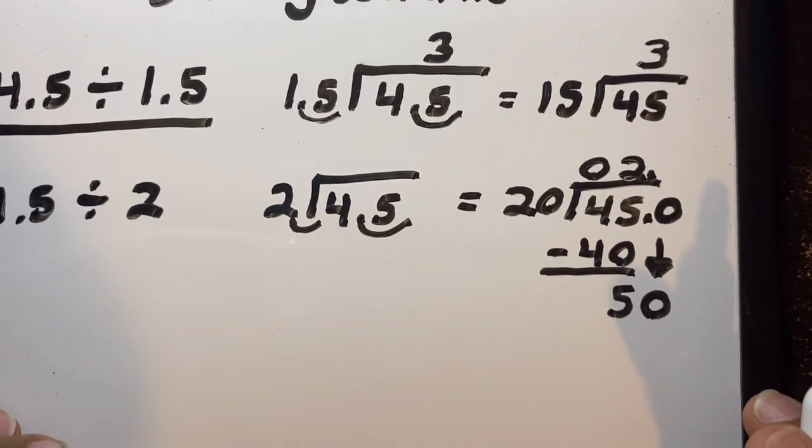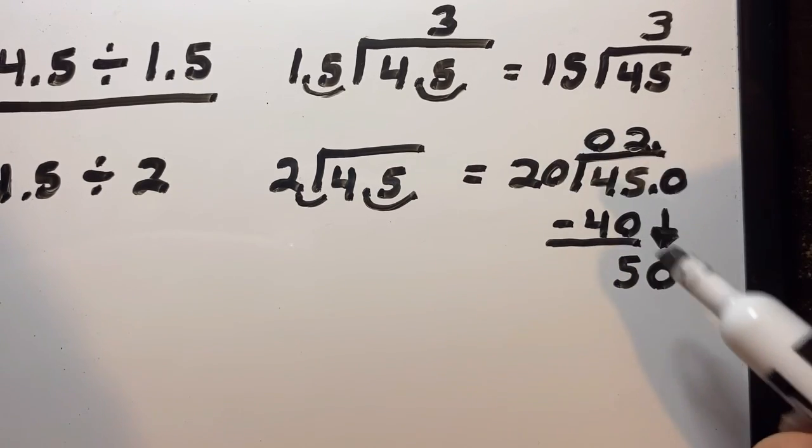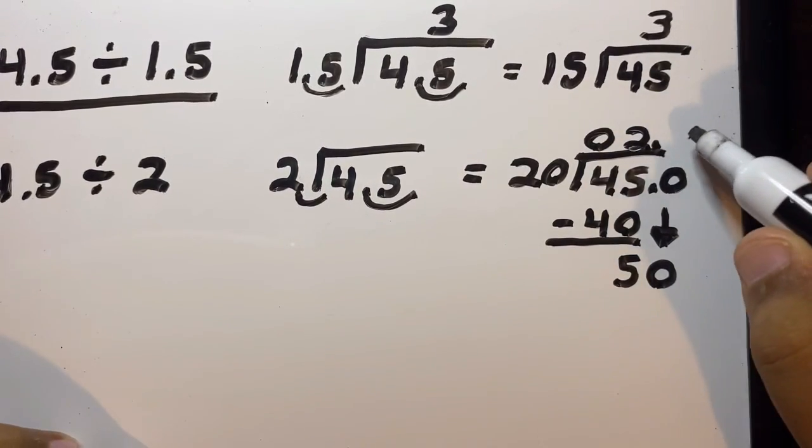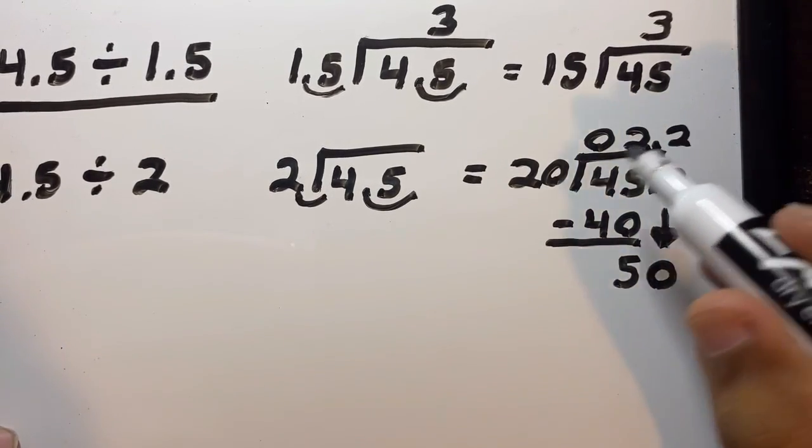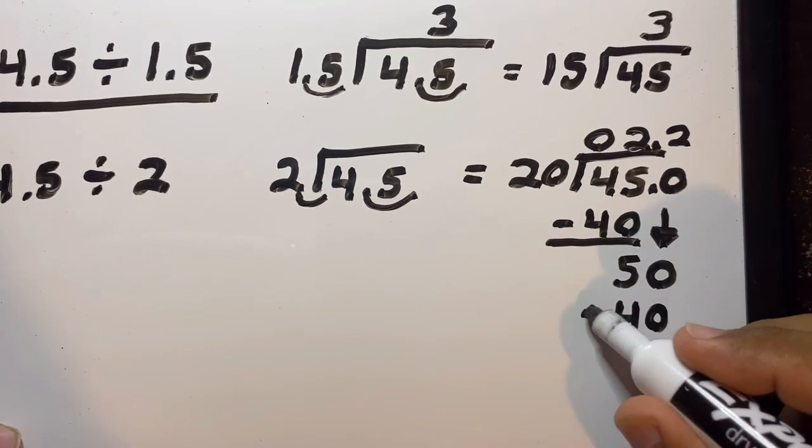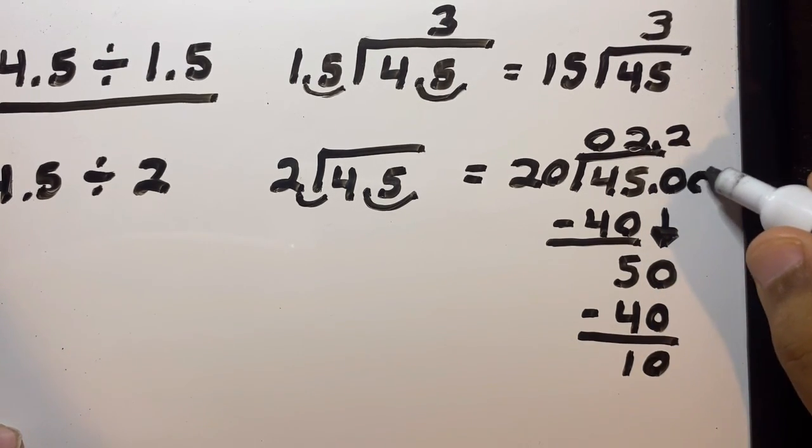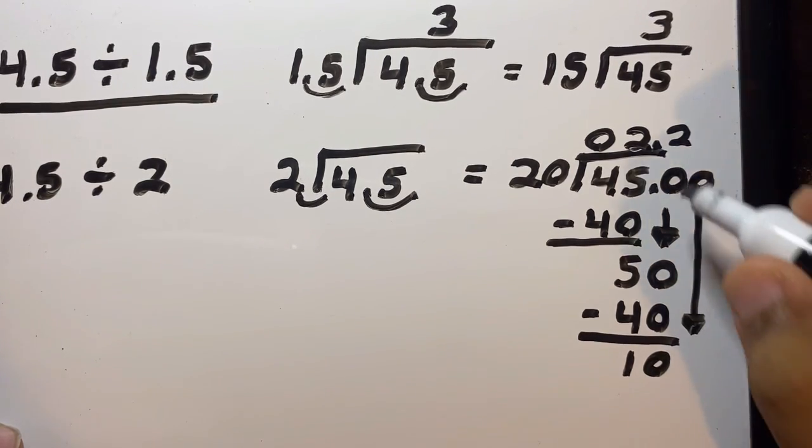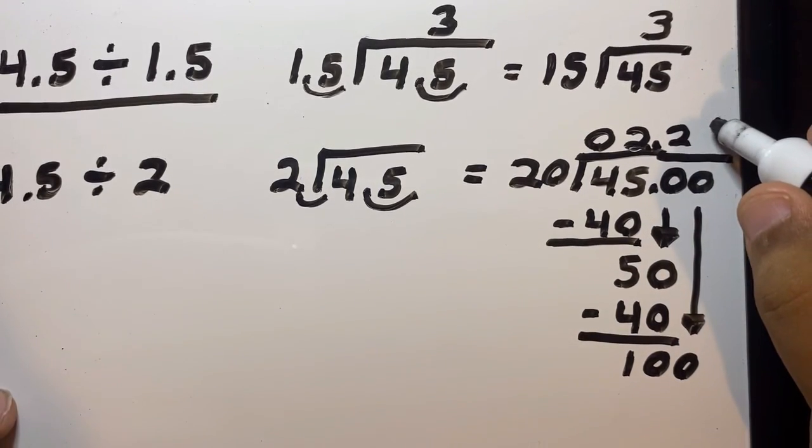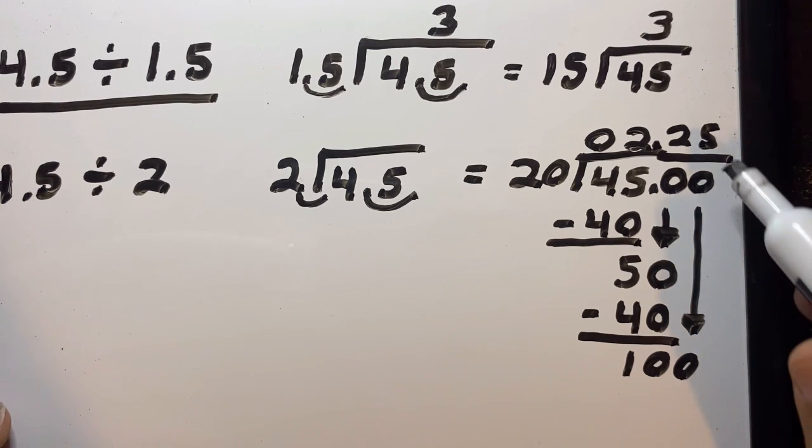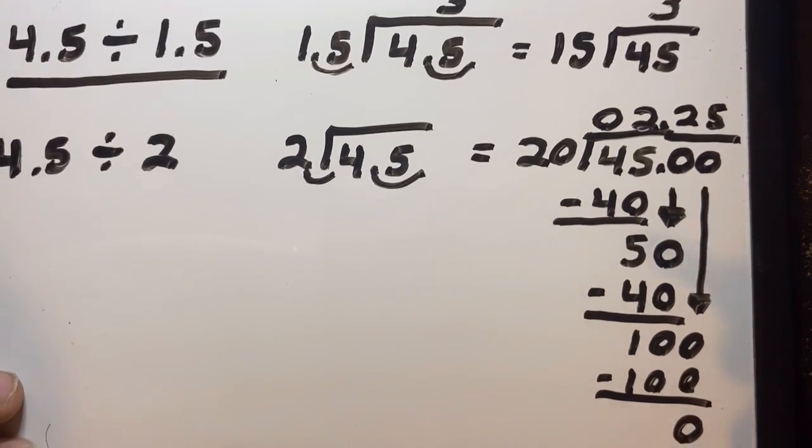Now we have to figure out how many times 20 goes into 50, and we know it can go in at least two times. So 2 times 20 is 40. Subtract that and we have 10. Because we have a remainder, we add another zero and drop it down. Now we need to figure out how many times 20 goes into 100, and the answer is 5. So 5 times 20 is 100, and now we have no more remainders because 100 minus 100 is 0.